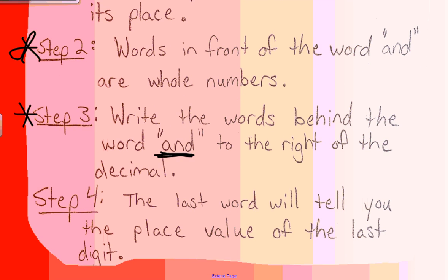Now, when we look at step number four, it is a pretty difficult step, but what we simply do is look for the last word. And that last word will tell you the place value of the last digit that we have.